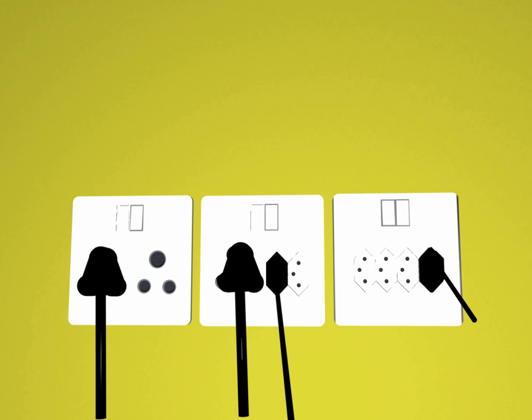IEC 60906-1 plugs and socket outlets are rated 16A, 250V AC and are intended for use on distribution systems having nominal voltages between 200V and 250V AC.